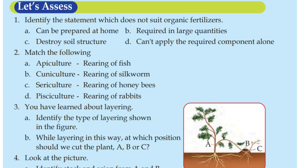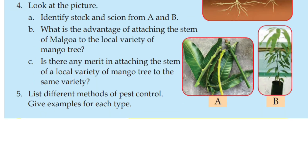You can use a separate plant for layering. The options are A, B, or C. The answer is B. Now, look at the picture — identify the stock and scion from A and B. In these two parts, we have a stock or a scion.